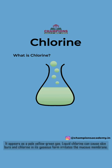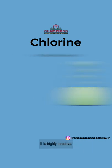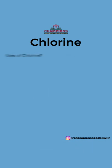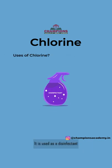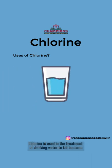Sodium chloride has a molecular formula NaCl, whereas hydrogen chloride has a molecular formula HCl. Chlorine is highly reactive. Among its uses, it is used as a disinfectant.